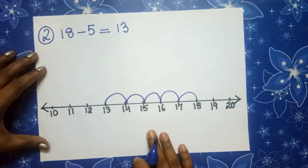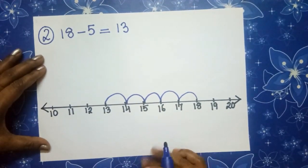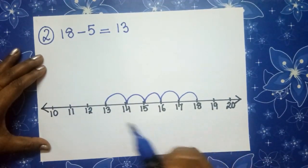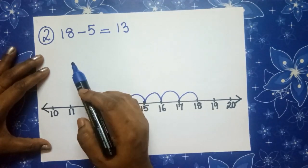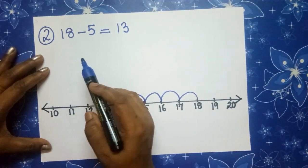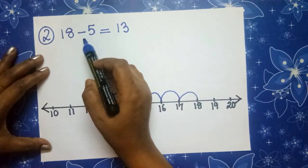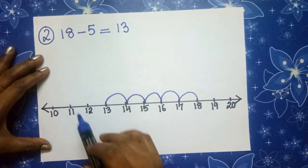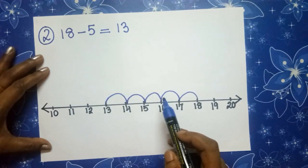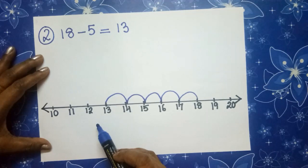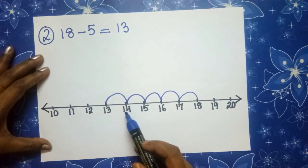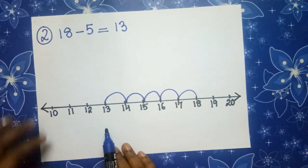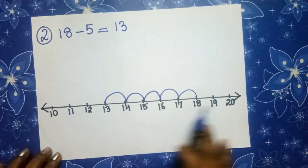Always remember children: start with the first number and point it on the number line. Then check whether it is a plus sign or a minus sign — whether you have to go forward or backward. If it is a plus sign, we go forward. If it is a minus sign, we go backward. And that is subtraction using the number line.